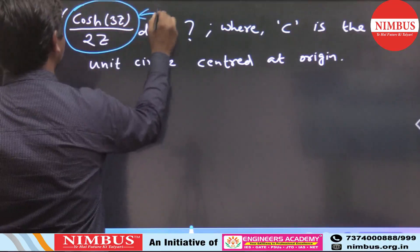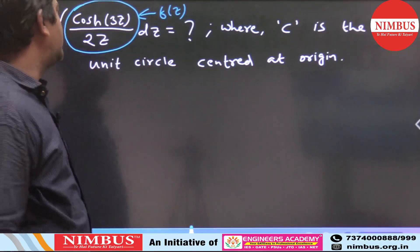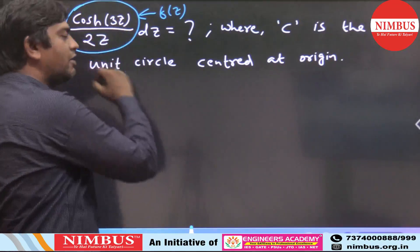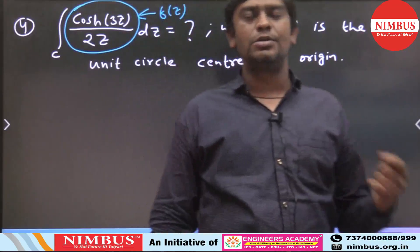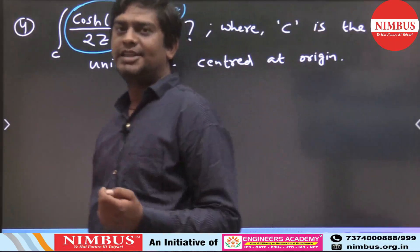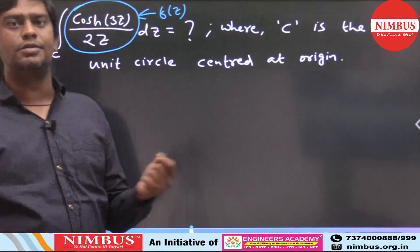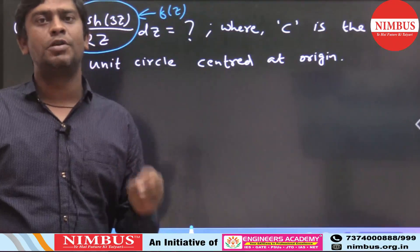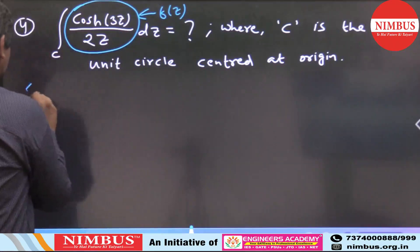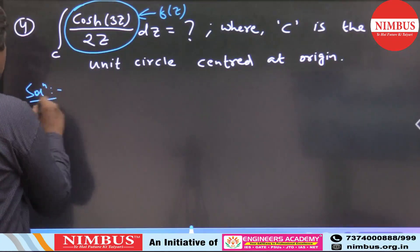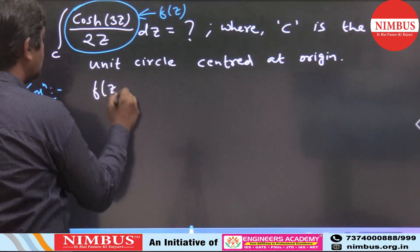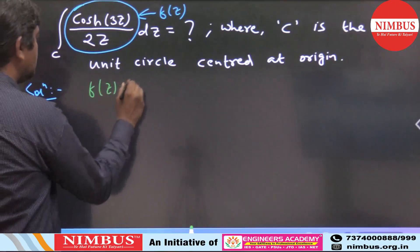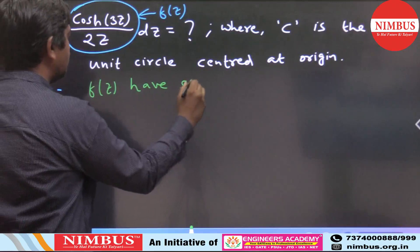The function cosh in the numerator is analytic, no problem. But in the denominator, when z = 0, the function becomes undefined — it becomes discontinuous, non-differentiable, and non-analytic. So at z = 0, the function has a singularity.